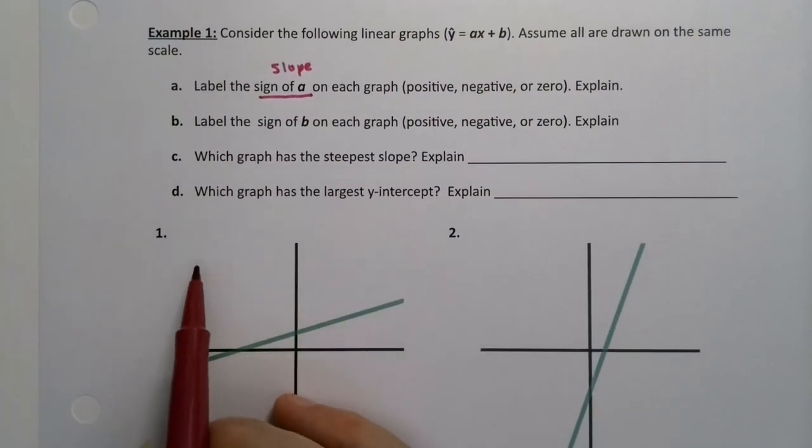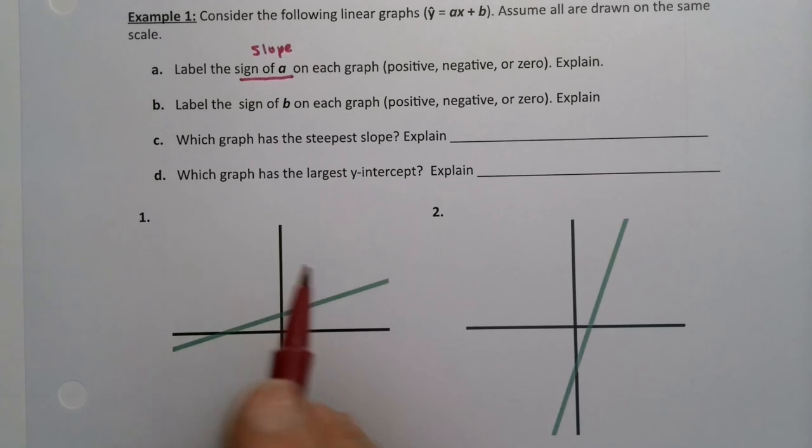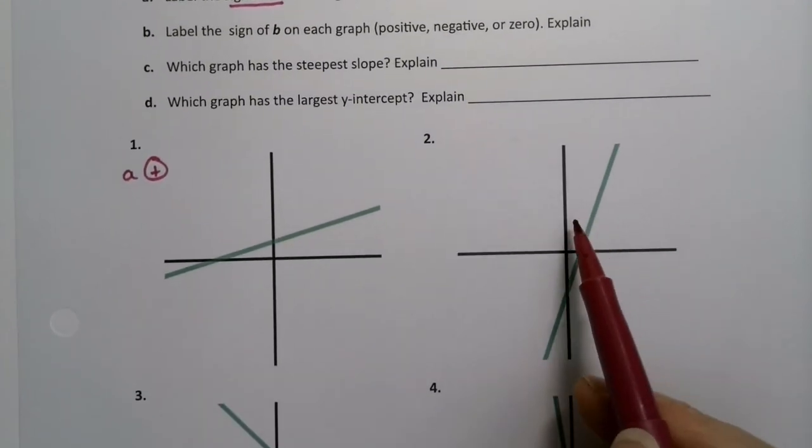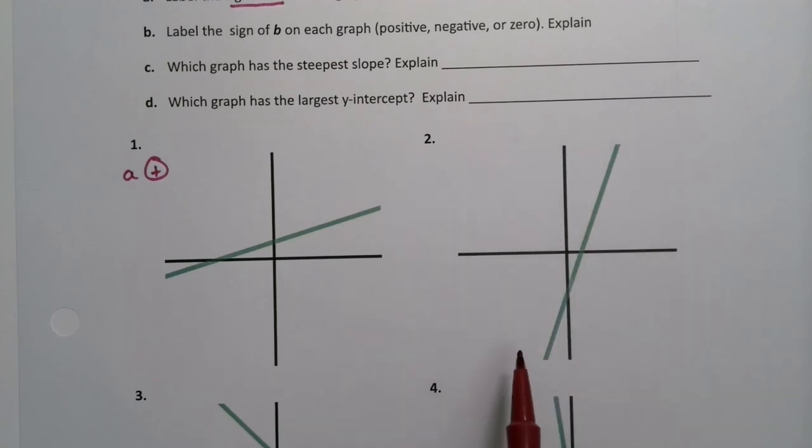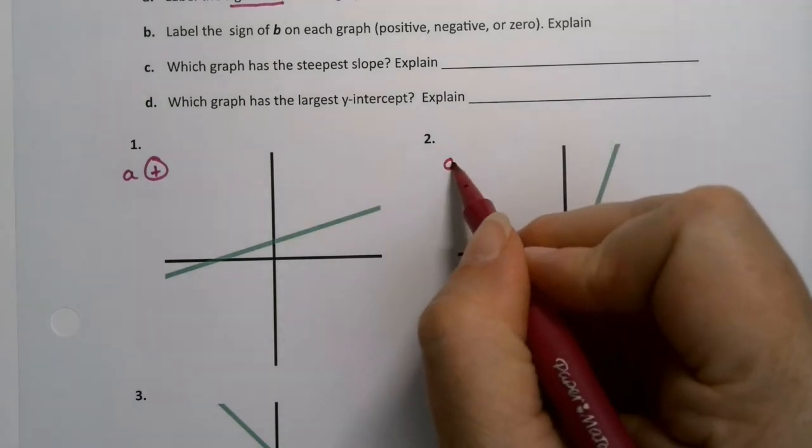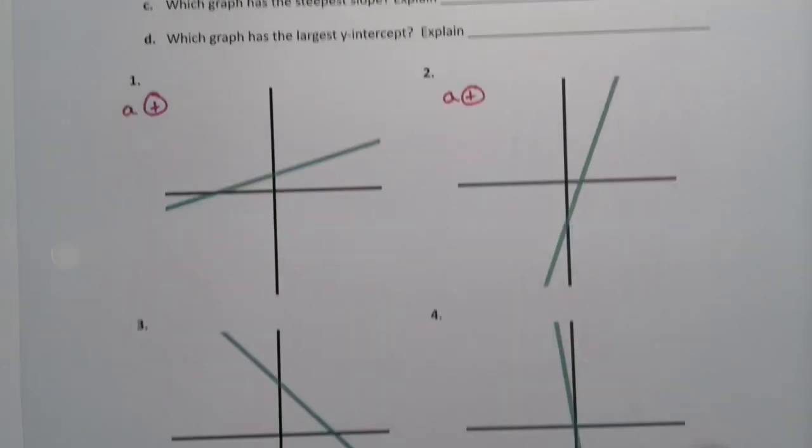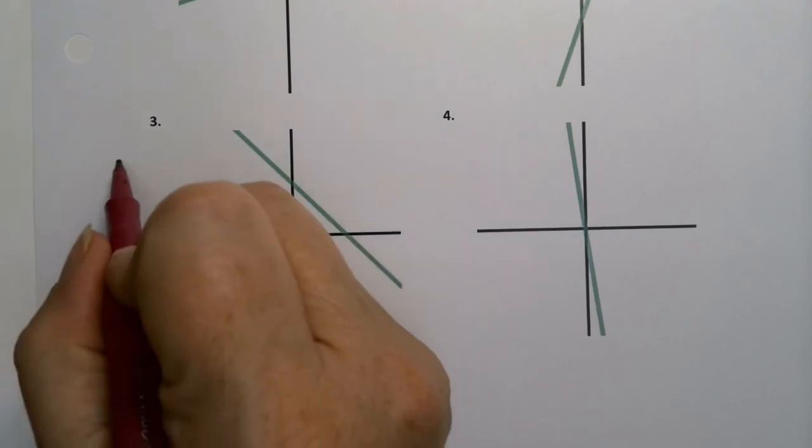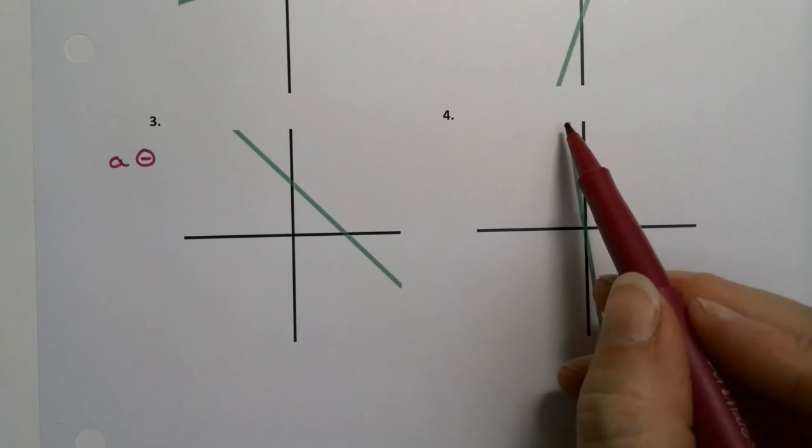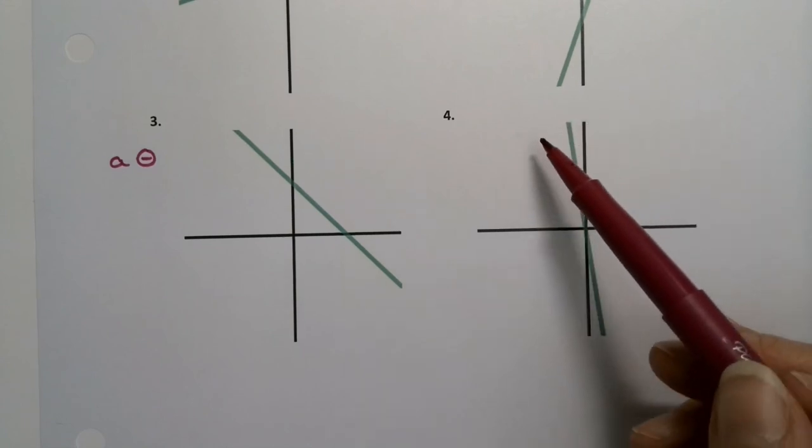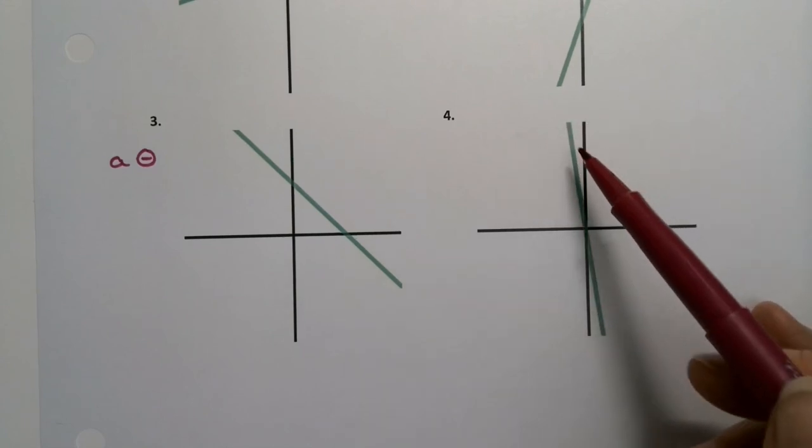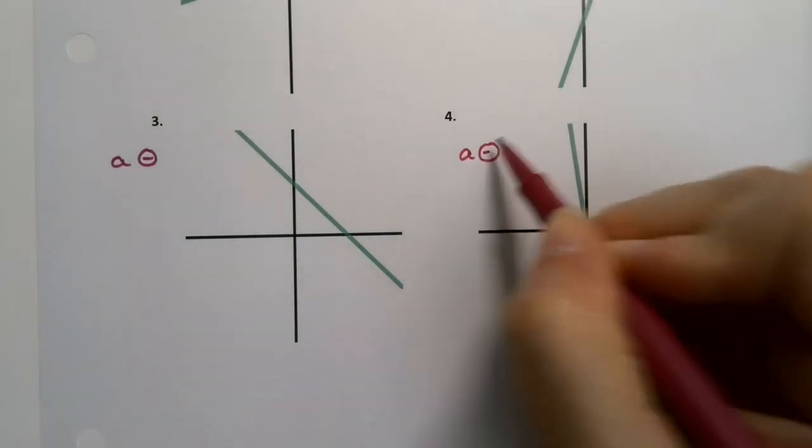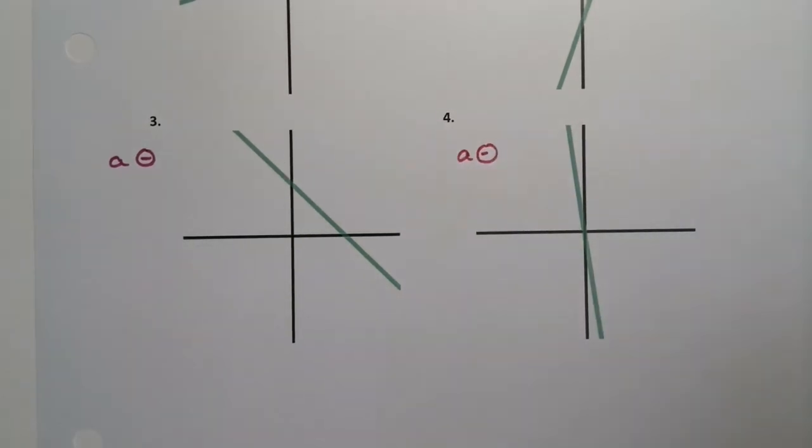So a would be positive or negative or zero, and we'll explain. Remember, a is the slope. Let's look at this first example right here. This would have a positive slope, so a is positive. Over here, it's positive - if I move from left to right, as you move from left to right, it's increasing. So this also has a as positive. Graph 3, as I move from left to right, the line is going down, so a is negative. And this one, if you move from left to right, you're going down, so this is a is negative.